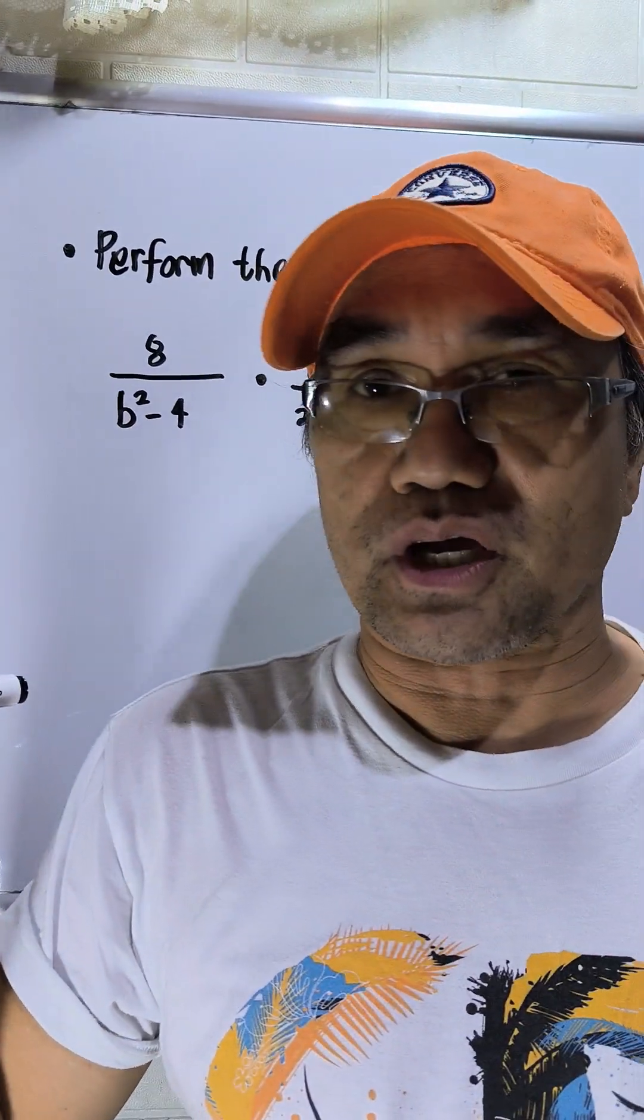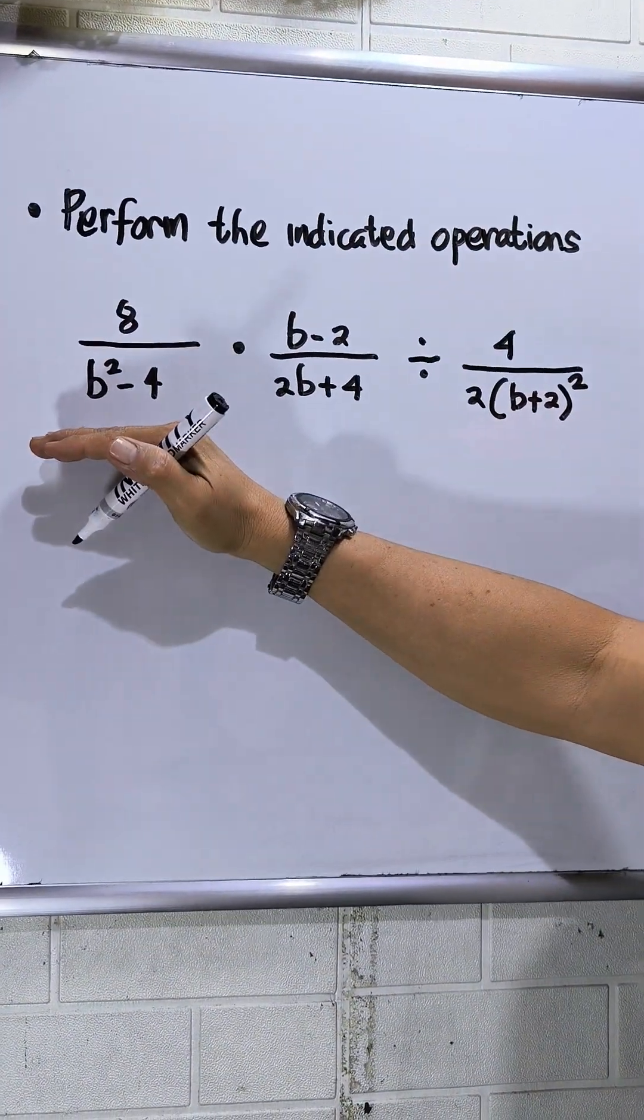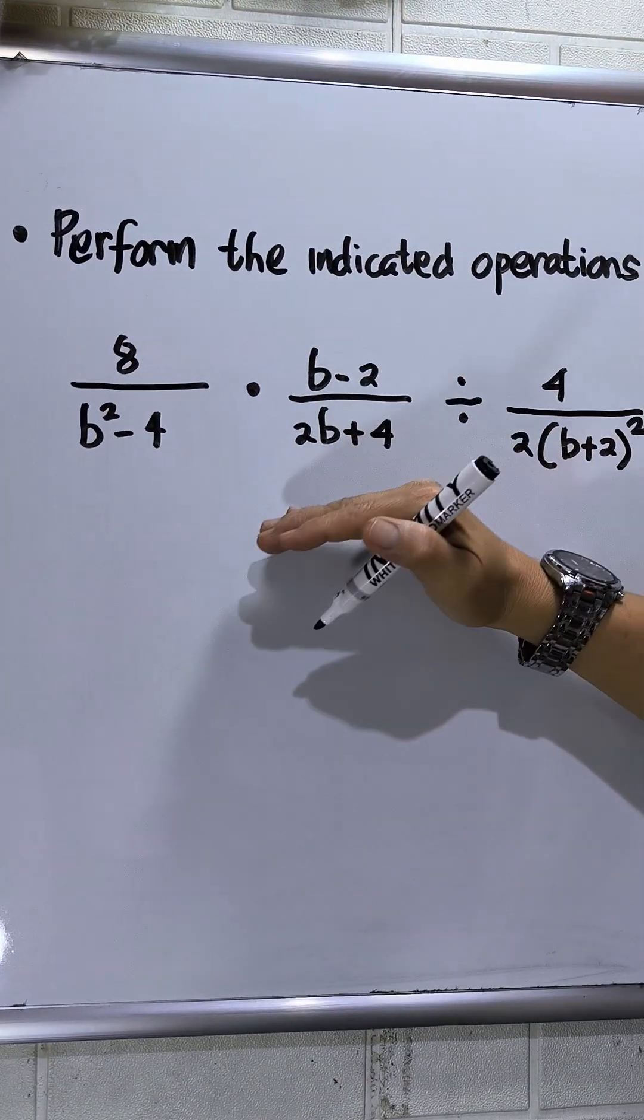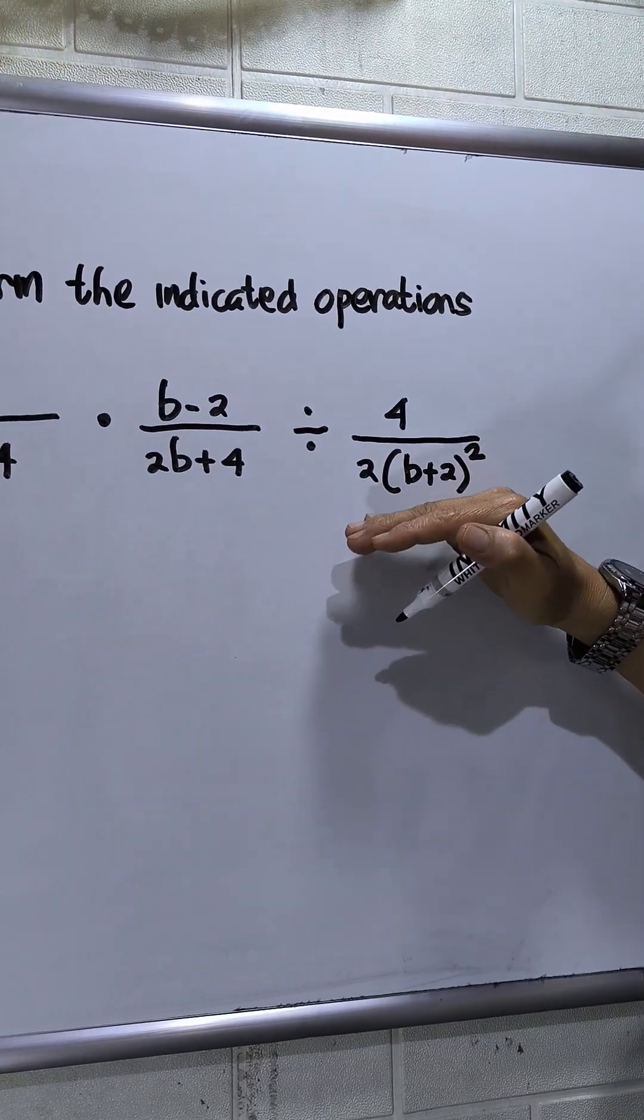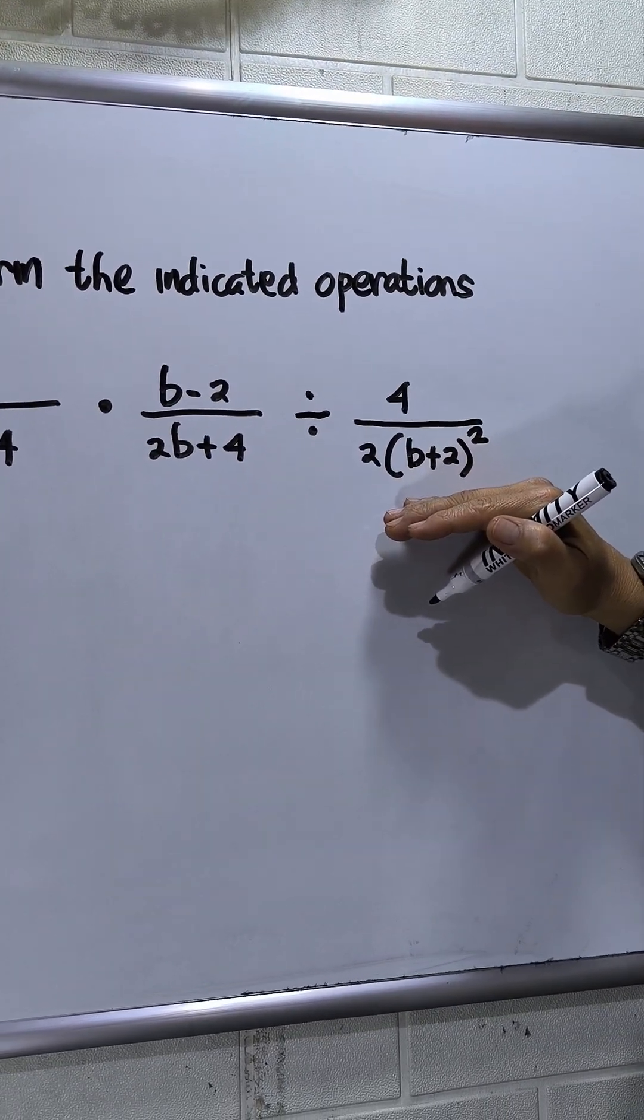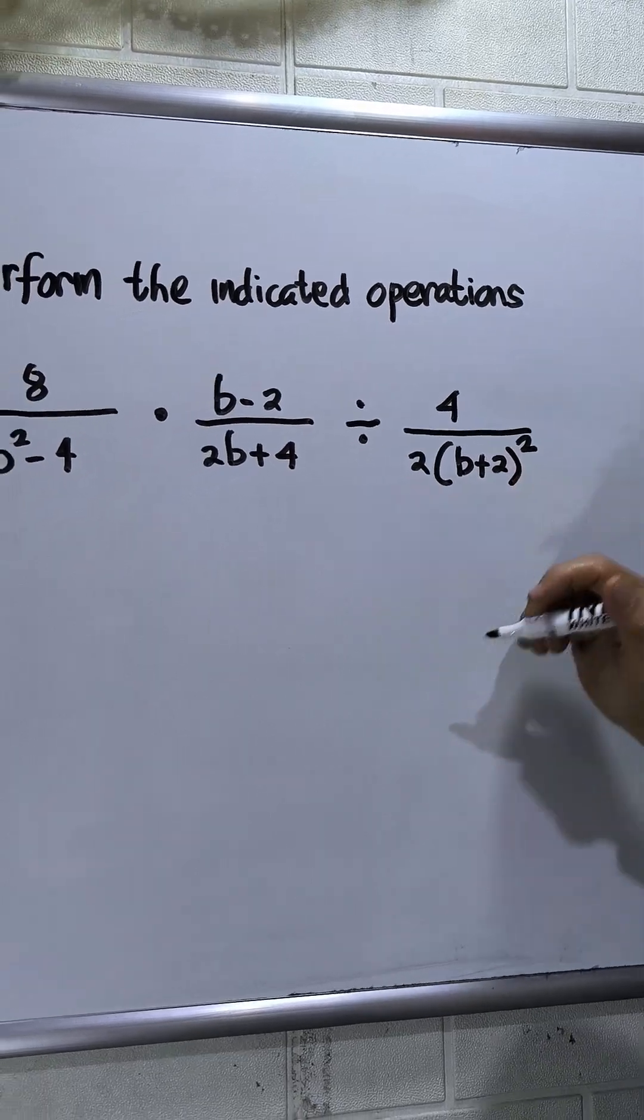Perform the indicated operations. I have here 8 over b squared minus 4, times b minus 2 over 2b plus 4, divided by 4 over 2 times open parenthesis b plus 2 close parenthesis squared.